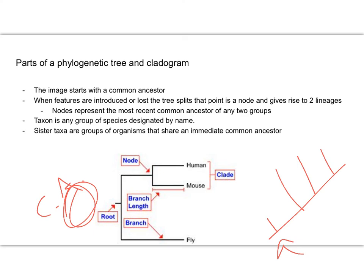You're going to start with our common ancestor. Then when features are introduced or lost—because remember you can build your tree based on characters that are gained or characteristics that are lost—the tree will split. That area where it splits is called a node. That node gives rise to two lineages—usually the organisms that have it versus the ones that do not. The nodes are going to represent our most recent common ancestor of any two groups.